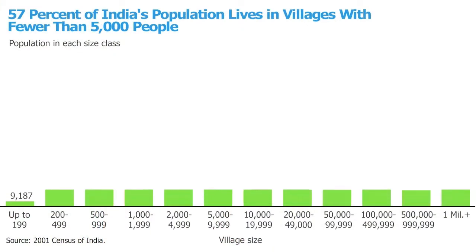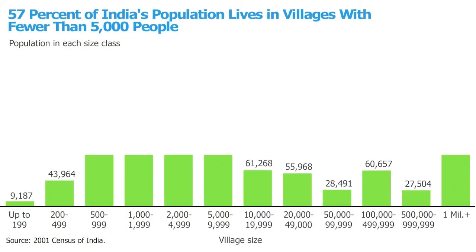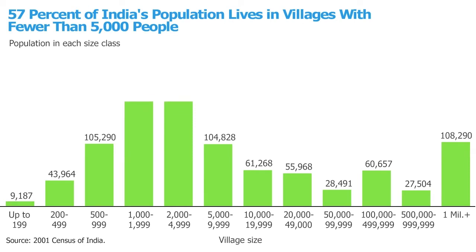The next graph shows how towns, villages, and cities in India are distributed by size. Moving from left to right, that tallest bar is for villages of 2,000 to 4,999 people. Now the lowest criteria for an urban area in India is 5,000, so technically none of those places could qualify as urban. We can see that the distribution of towns and cities is heavily skewed toward the smaller ones.